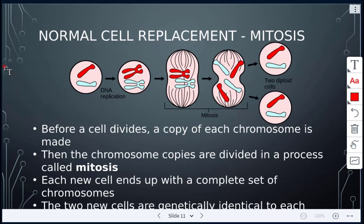Here is mitosis occurring. Before a cell can divide, we have to replicate or duplicate the DNA. A copy of each chromosome is made — here we have the red chromosome and the blue one, and it replicates, so it has doubled.